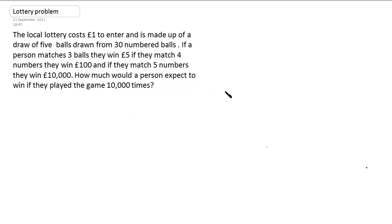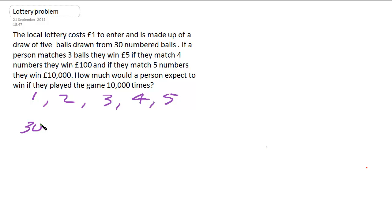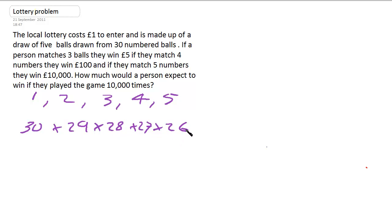We've now solved this problem. Let's look at how we can use the ideas we've discovered to get a general formula. Going back to our five possible winning numbers, we had five numbers that could win. We worked out that what we needed to do was multiply these numbers together to get how we could order five chosen numbers from our 30 numbers. Effectively, what we're doing is getting a permutation of five numbers from 30.